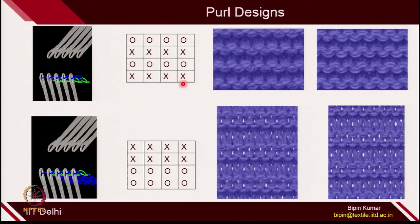Now let's move to the pearl design. I already introduced this in week number 4. In pearl designs, we create technical front and back loops in the same column. In rib designs, you create technical front and back loops in the same course. In pearl designs, you create technical front and back loops in the same column or wale direction. The simplest pearl design is 1×1 pearl.